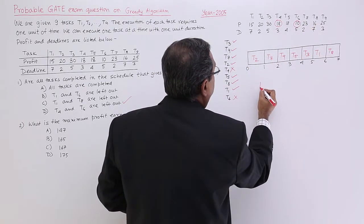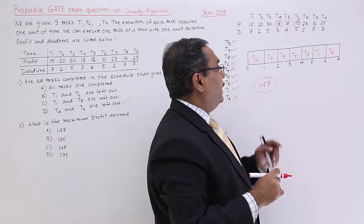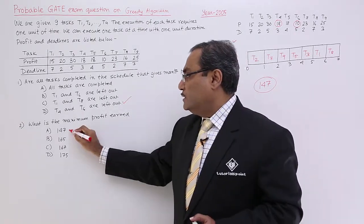Maximum profit means I should go on adding these profits excluding T4 and T6. If you go on adding, it will be coming as 147. If you do the calculation, you will be getting 147. So 147 will be the answer.